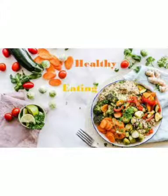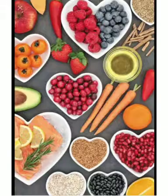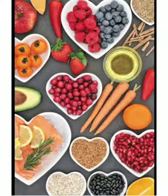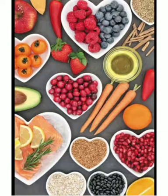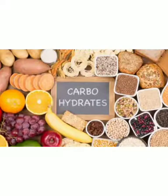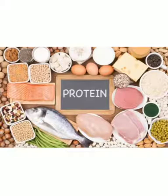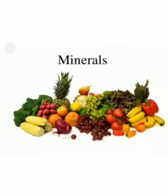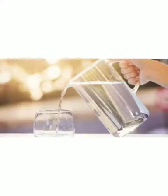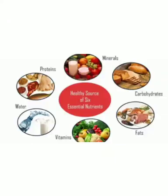During our growing stage — like you children are growing right now — your body needs different nutrients. As you have studied before, we need carbohydrates, proteins, fats, vitamins, minerals, and water. All these nutrients are not found in a single food; they are present in different food items. One food may give us carbohydrates, another may provide protein.